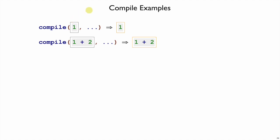So all I'm saying here is that 1 in exp compiles to 1 in expd, 1 plus 2 also compiles over with no real changes.